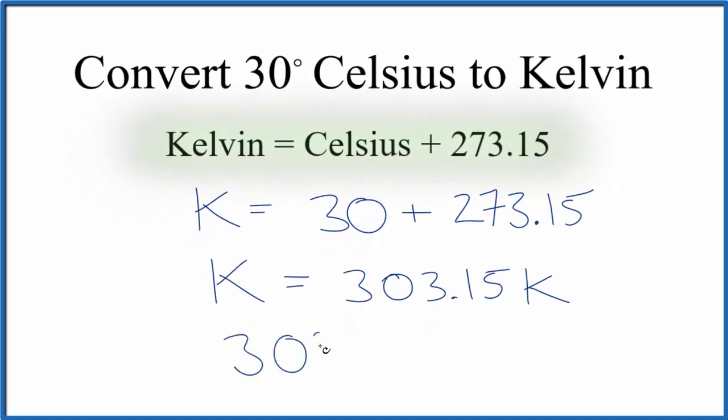30 degrees Celsius equals 303.15 Kelvin. Note that we don't write a degree symbol with Kelvin; we just have the K here after the number. That's how you convert from 30 degrees Celsius to Kelvin.